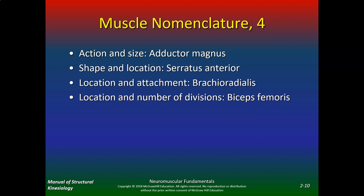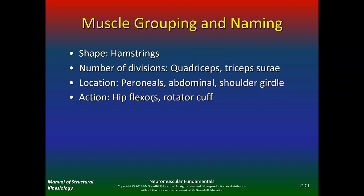That's the way you should memorize the muscles. The hamstrings — number of divisions. Quadriceps — four. Triceps surae — three. Location: the abdominals, the shoulder girdle. Action: the hip flexors, the rotator cuff. So learn them in groups and by names, so that it's not just foreign words you're trying to memorize.